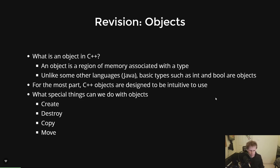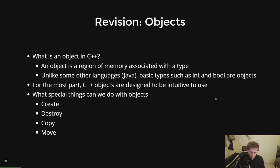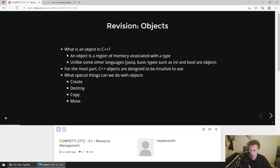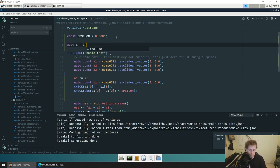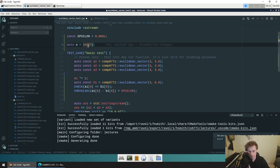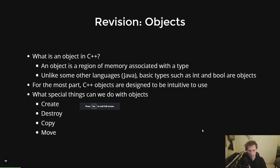First, a bit of revision on objects. We talked about this back in week three — an object is a region of memory associated with a given type. In C++, unlike Java, ints and bools are treated as objects, not as separate primitive types. That's why in C++ we've been able to do things like auto a = int(5), because we're essentially constructing this int with value 5. Objects can be created, destroyed, copied, or moved — and moving objects might be a new concept to many people here.